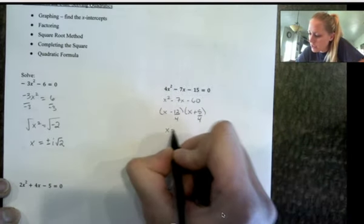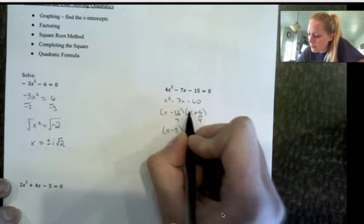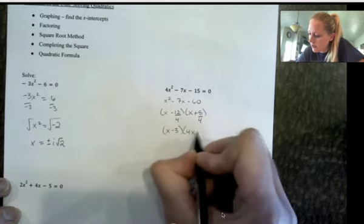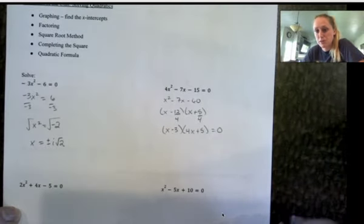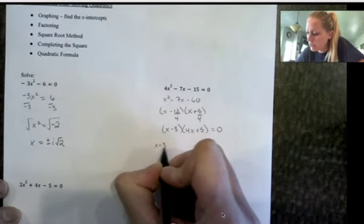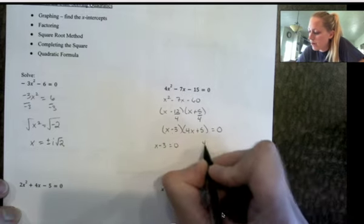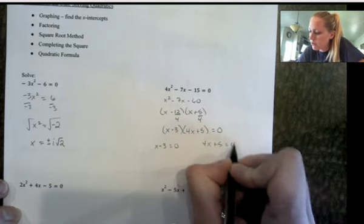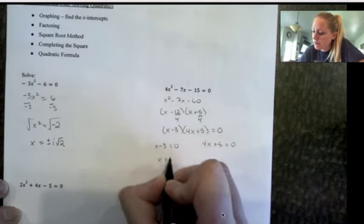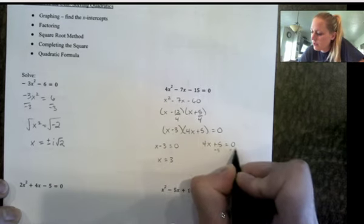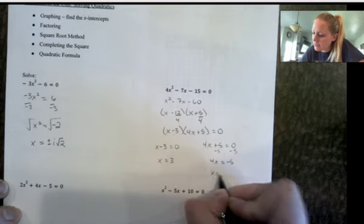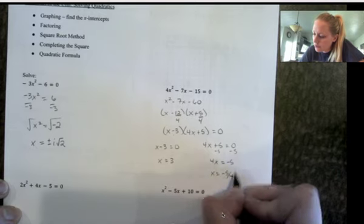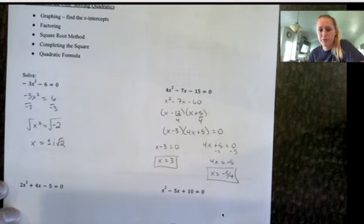So x minus 3, bottoms up here. Once we have it factored, we just set each group equal to zero. So I have x minus 3 equals zero, and 4x plus 5 equals zero. So x is going to be 3 here. And here x is going to be negative 5 fourths. So those are my two solutions, negative 5 fourths and 3.